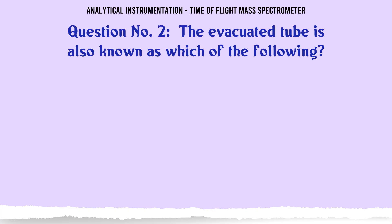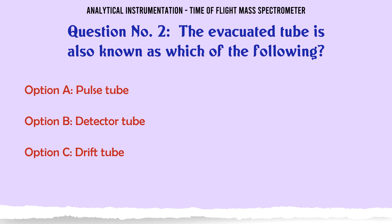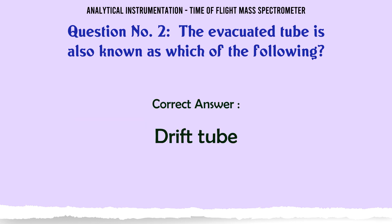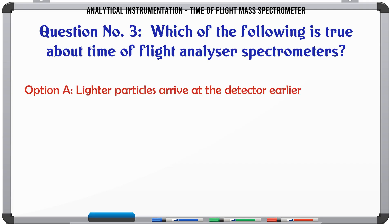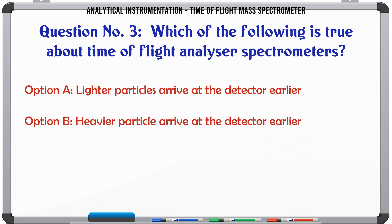Evacuated tube is also known as which of the following? A: Pulse tube. B: Detector tube. C: Drift tube. D: Acceleration tube. The correct answer is C: Drift tube.